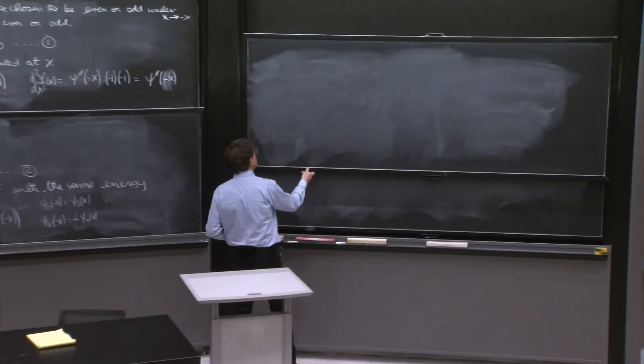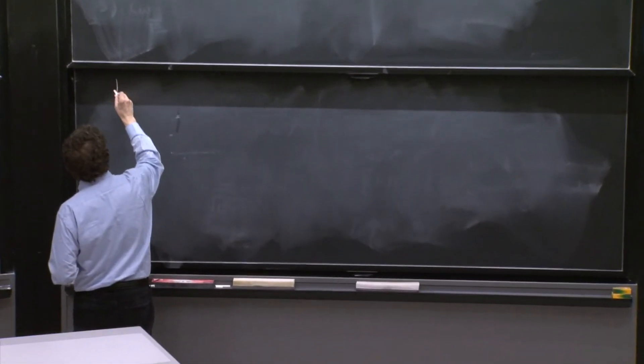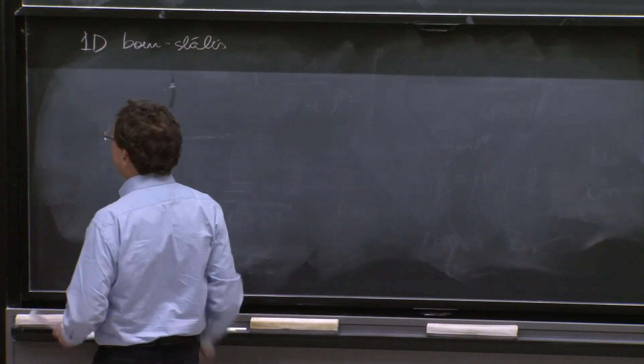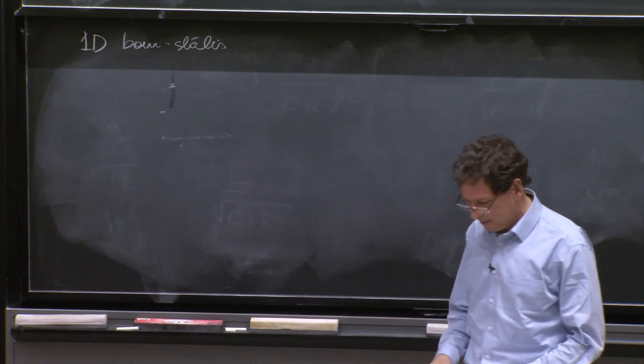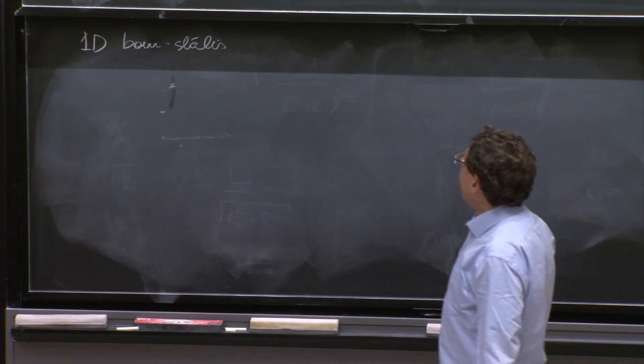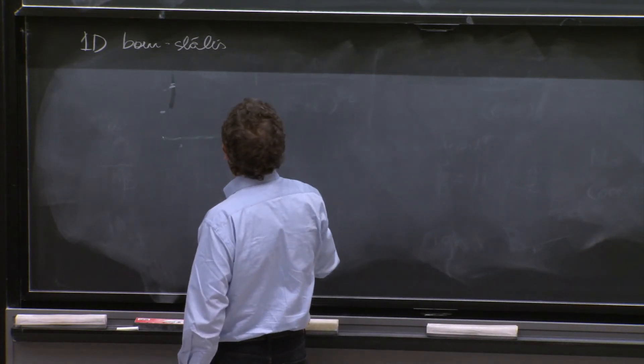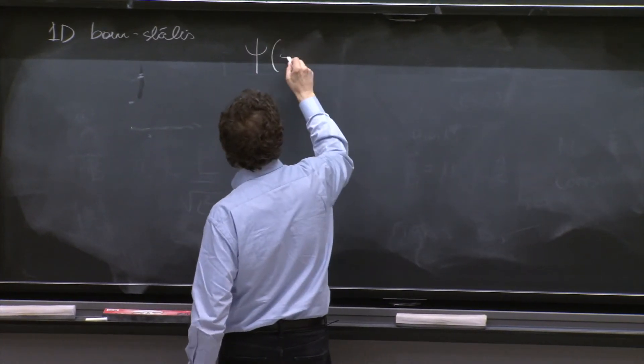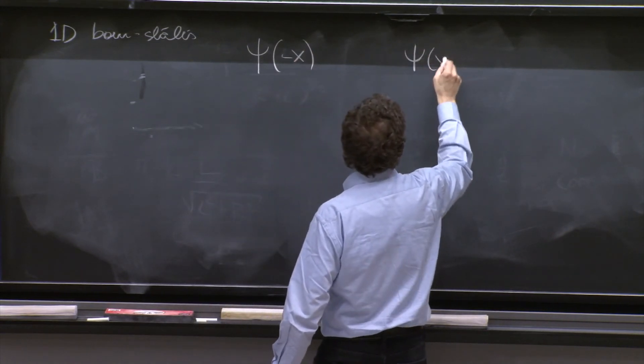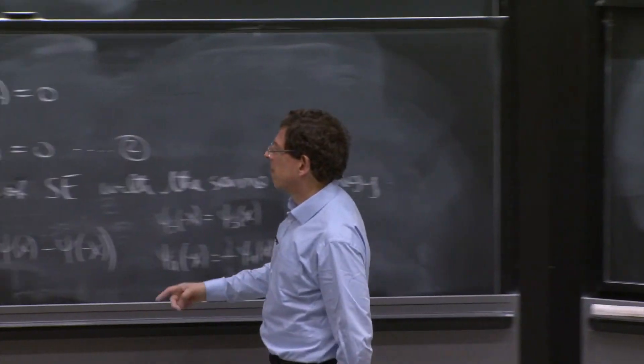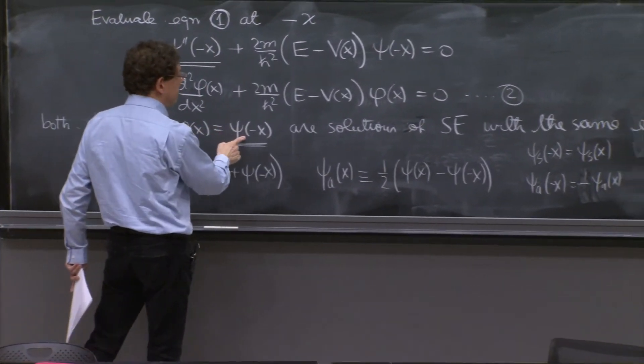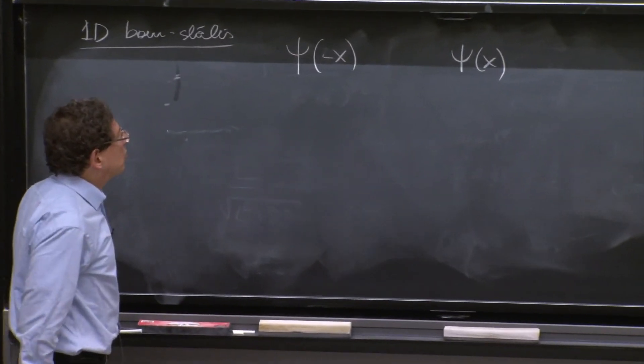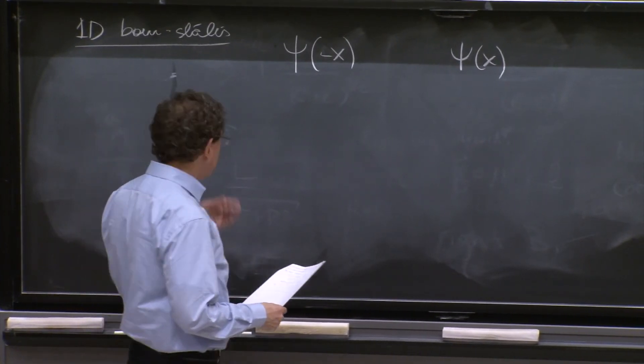But now we go to the second part of the statement. So for one dimensional bound states, 1D bound states, again, there cannot be two solutions. So it cannot be that there are two degenerate solutions. So after all, ψ(x) and ψ(-x), we have two solutions. This and ψ(-x). But if you're in a one dimensional bound, then you cannot have two solutions. So they must be proportional to each other.